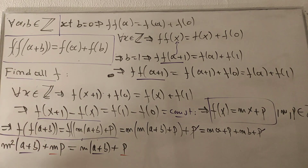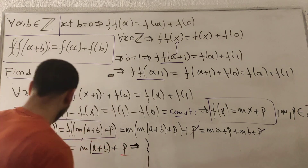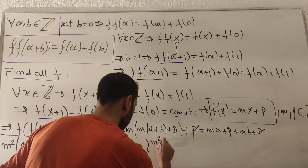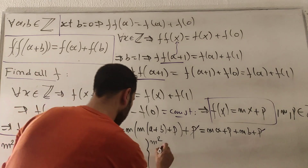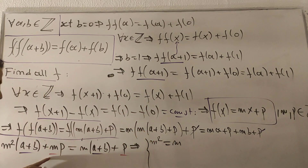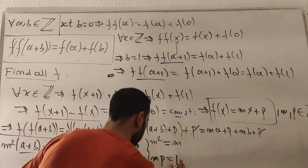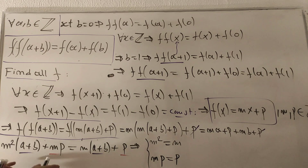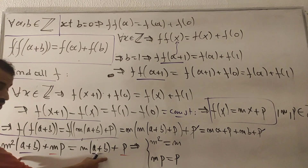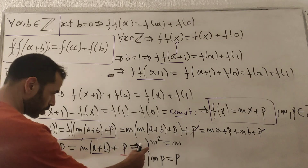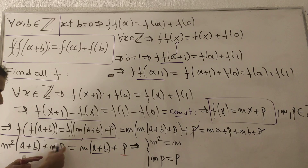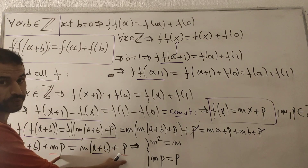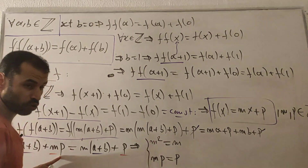Matching coefficients by like terms: the coefficient of (a+b) gives m² = m, and the constant term gives mp = p. Be careful here — (a+b) is a variable, so only match its coefficient; p is a constant, so take the whole constant term.